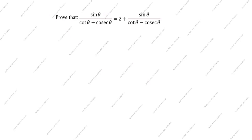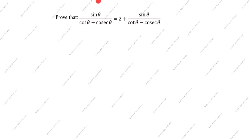Hi friends, welcome to my channel Excellent Ideas in Education. Today we are going to solve this trigonometry identity problem. This is a very important problem. Prove that sin θ divided by (cot θ + cosecant θ) equals 2 plus sin θ divided by (cot θ minus cosecant θ). We will prove LHS equal to RHS.